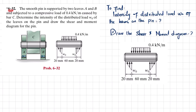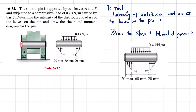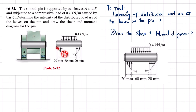Welcome back. Problem 6-32: a smooth pin is supported by two leaves A and B and is subjected to a compressive loading of 0.4 kilonewton per meter caused by bar C. Determine the intensity of distributed load w-naught on the pin and draw the shear and moment diagram. The pin has a compressive load at the center and uniformly increasing distributed loads at leaves A and B. We will first find the intensity w-naught.